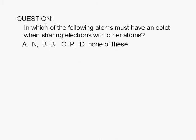Which of the following atoms must have an octet when sharing electrons with other atoms? A. Nitrogen, B. Boron, C. Phosphorus, D. None of these.